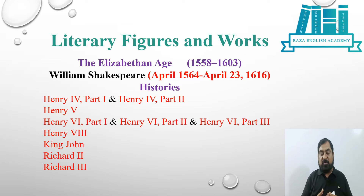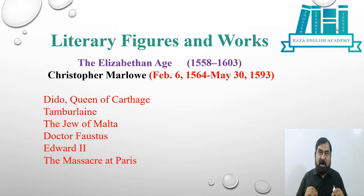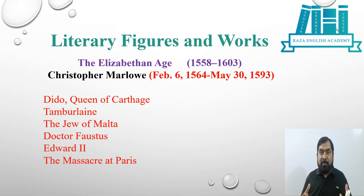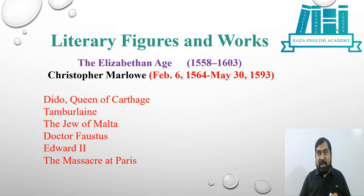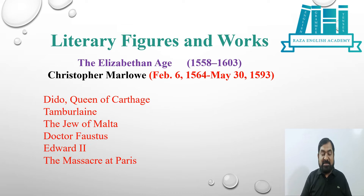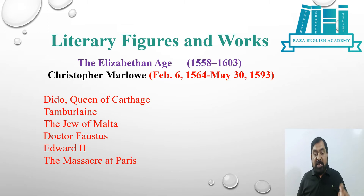The next most prominent writer of the age was Christopher Marlowe. His plays are called problem plays because his own life was quite problematic, and there is a view that all the problems found a kind of vent in his writings. He is considered one of the most important playwrights of the Elizabethan Age and the Renaissance overall. His works include Dido Queen of Carthage, Tamburlaine, The Jew of Malta, Doctor Faustus, Edward II, and The Massacre at Paris. I would suggest you read Doctor Faustus, The Jew of Malta, and Tamburlaine in detail, as these three plays are part of one or another university syllabus in Pakistan.